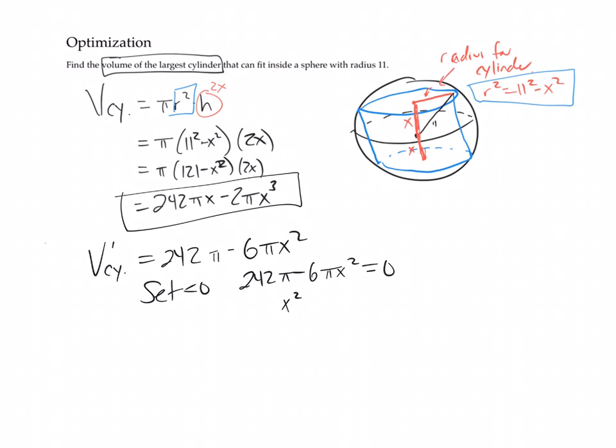So x squared is going to be 121 over 3. So when I take the square root, it's going to be 11 over the square root of 3. So this 11 over square root of 3 is going to be the largest x that will fit in the sphere.